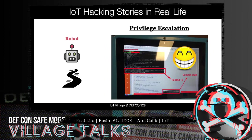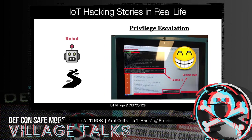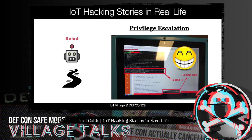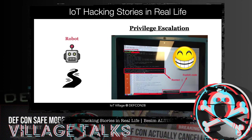After accessing the terminal via that weakness, we gathered information about the device using the uname command. We then saw that there was a kernel vulnerability, and we escalated privileges on the system using an exploit downloaded from Exploit-DB.